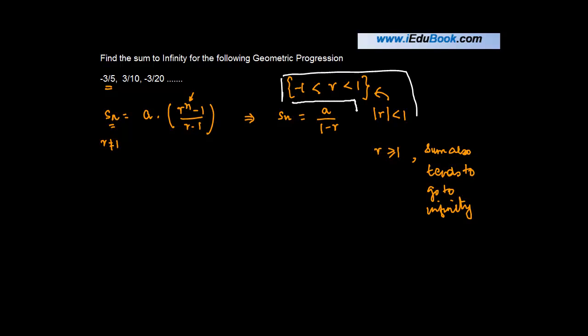The value of r lies between minus 1 and 1, greater than minus 1, less than 1, and the mod of r is positive or it's less than 1. In that case, the sum of an infinite GP is given as a upon 1 minus r. If r is greater than or equal to 1, then the sum of the GP also tends to go to infinity.